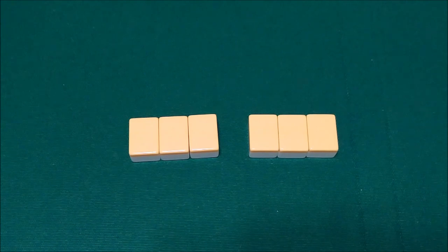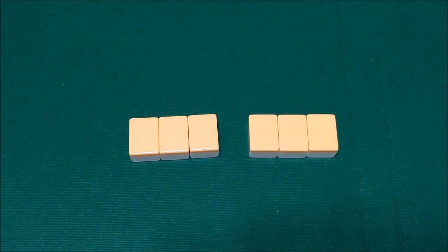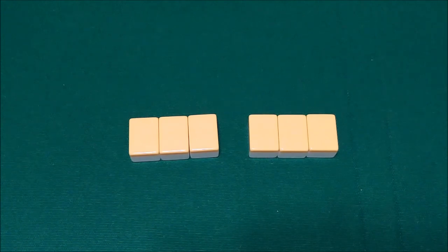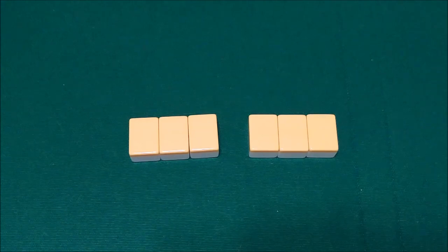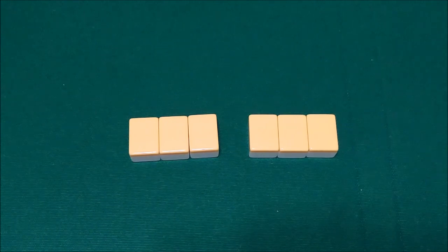The first thing you consider when determining the Fu value of your hand is how you won the hand. If you won Ron, meaning that you won off of someone else's discard, and your hand is completely closed, meaning that you did not call anyone else's discard before that point, then you get 10 Fu. However, if your hand is open and you win Ron, you don't get that. The other thing is that you get 2 Fu for winning Ron, regardless of whether your hand is open or closed.